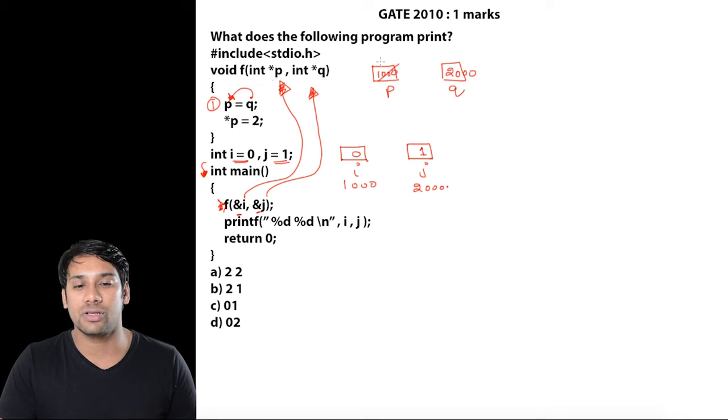In line two, we're doing *p equals 2, meaning we go to the location pointed by p and change the value, storing 2 at that location. The new location pointed by p is 2000, so we store 2 there. Therefore, j now stores 2.